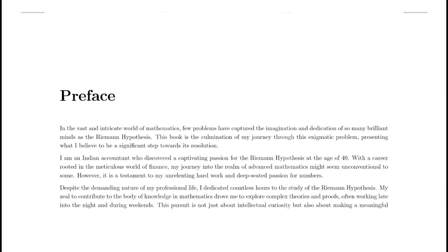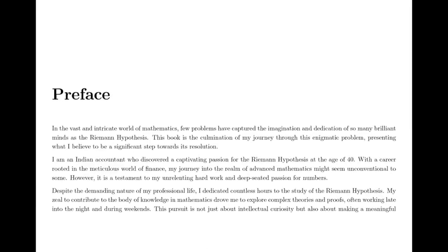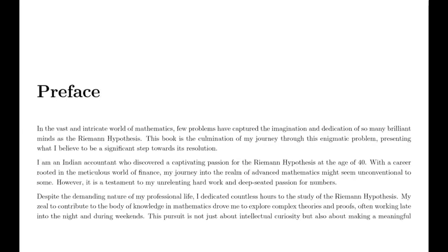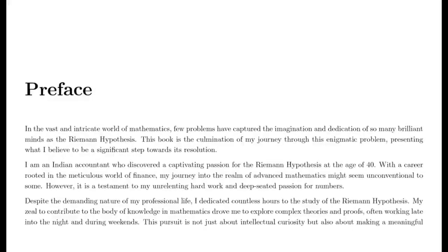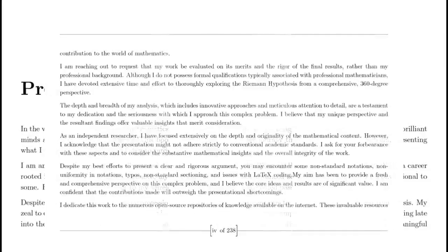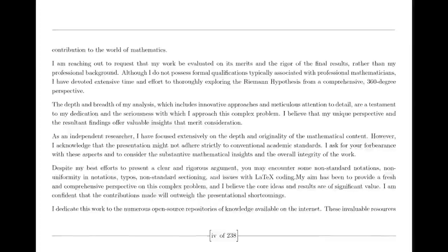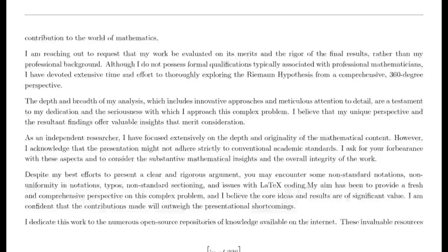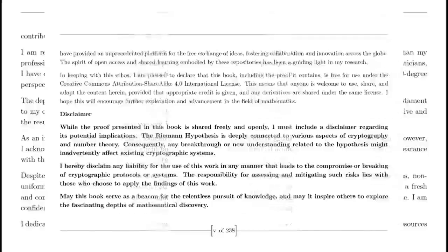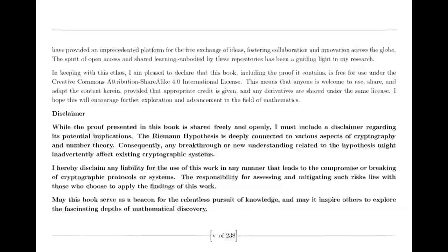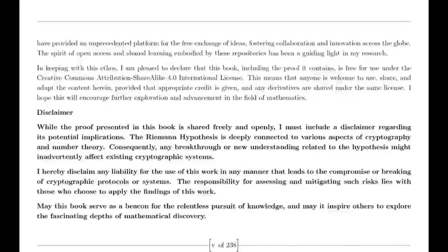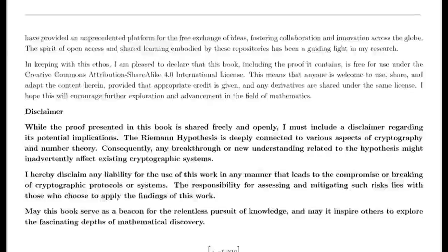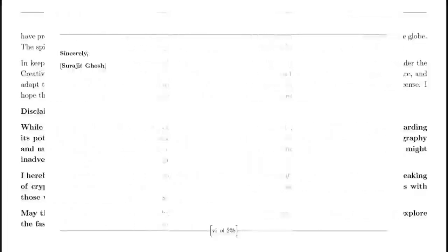We begin with the remarkable contributions of Leonhard Euler. In the 18th century, Euler made groundbreaking discoveries in understanding infinite series. He introduced the idea that the harmonic series — the sum of the reciprocals of the positive integers — could be expressed as a product over prime numbers. This revolutionary insight linked the harmonic series to the profound properties of prime numbers, and was one of the first indications of the deep connections between primes and series.